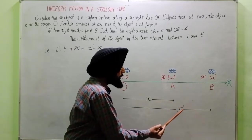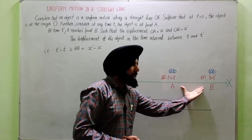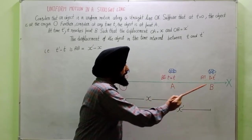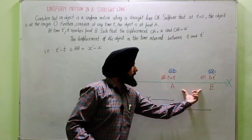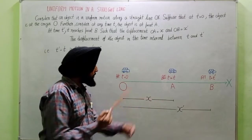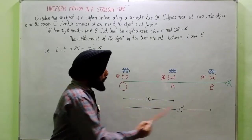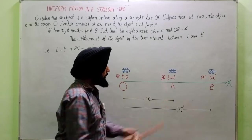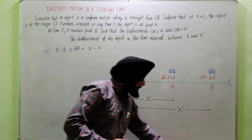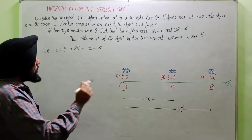From O to B, displacement is x-dash, and from A to B the time interval can be found. Similarly, O to A is x, O to B is x-dash. Displacement A to B is OB minus OA, that is x-dash minus x.